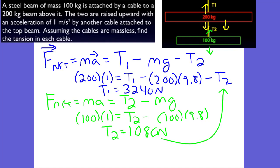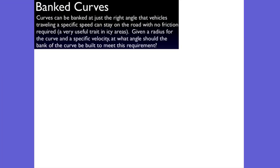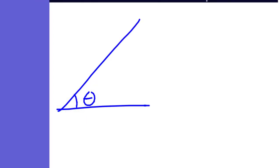Let's take a look at banked curves — these are things you're going to want to practice. When we have a car banking at a curve at angle theta, we can think about its free body diagram. It has a mass of gravity — its weight coming down — it may have friction on it, and it also has a normal force.